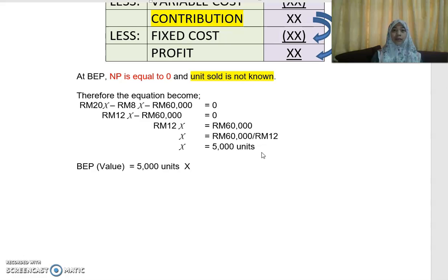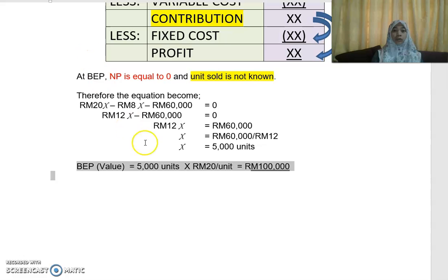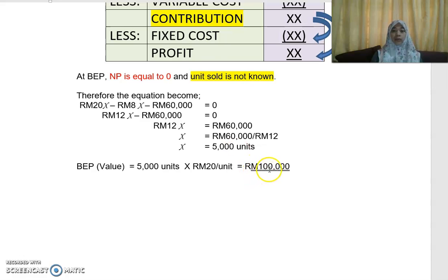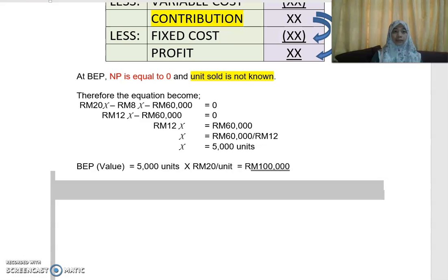You can also work out your break-even point in value or in RM. Your selling price is 20, so your break-even point in value is 5,000 units times 20 ringgit per unit, which gives 100,000. This means you need to sell 5,000 units and you will make 100,000 — that is your break-even point in value.